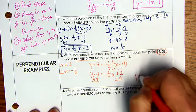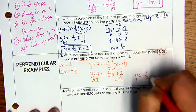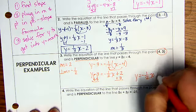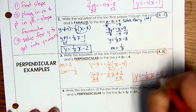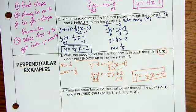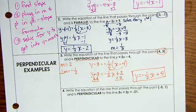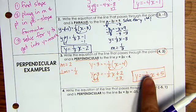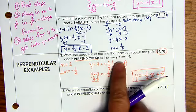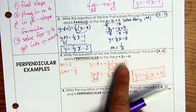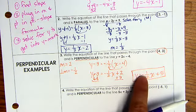Now we add 3 to both sides. And we end up with y equals negative 1 half x plus 5. There we go. And this line is perpendicular to this one. And it's very easy to see that because these two slopes are negative reciprocals of one another.